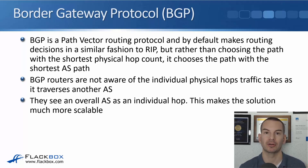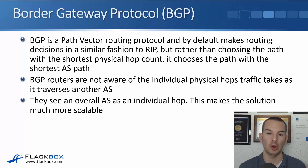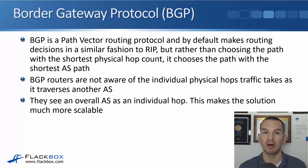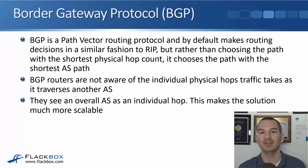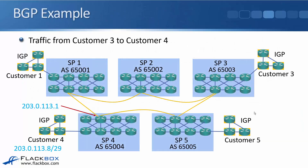BGP routers are not aware of the individual physical hops that traffic takes as it traverses another AS. They just see that other AS as an overall individual hop, and that makes the solution much more scalable than if they were aware of every physical hop.